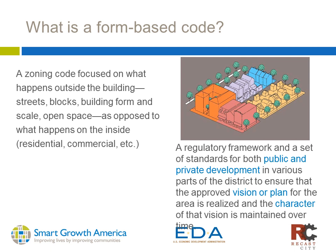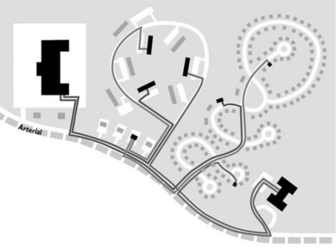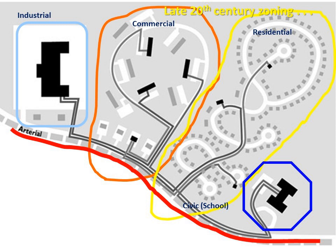The zoning codes that most places in this country still have in force are based largely on separation of uses and often not oriented toward traditional town development. We have areas for industrial use, commercial use, residential or institutional — all separated and connected only by arterial roads that require an automobile to get from one to another.